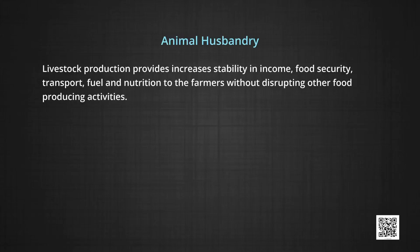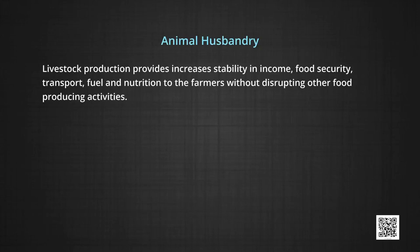Animal husbandry is also an important area. In India, the farming community uses the mixed crop-livestock farming system. Cattle, goats, and fowl are the widely held species. Livestock production provides increased stability in income, food security, transport, fuel, and nutrition to farmers without disrupting other food-producing activities. The livestock sector alone provides alternative livelihood options to over 70 million small and marginal farmers, including landless laborers.